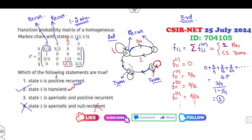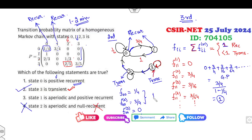Similarly, check state 0. Can you return to 0 in one step? Yes. In two steps? Yes — 0→1→0. In three steps? No, because once you've come back after two steps, you're already at zero. The sum works out to 1 again, confirming state 0 is also recurrent.